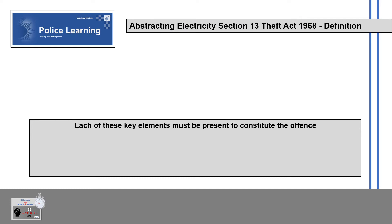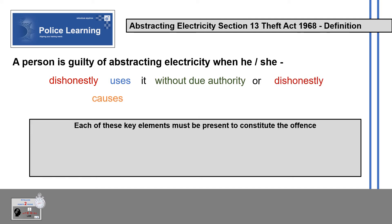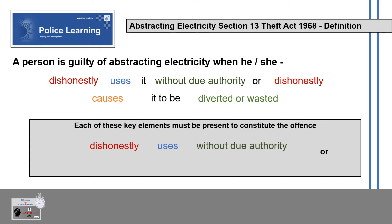The Definition: A person is guilty of abstracting electricity when he or she dishonestly uses it without due authority, or dishonestly causes it to be diverted or wasted. Each of these key elements must be present to constitute the offence: dishonestly uses without due authority, or dishonestly causes diversion or waste.